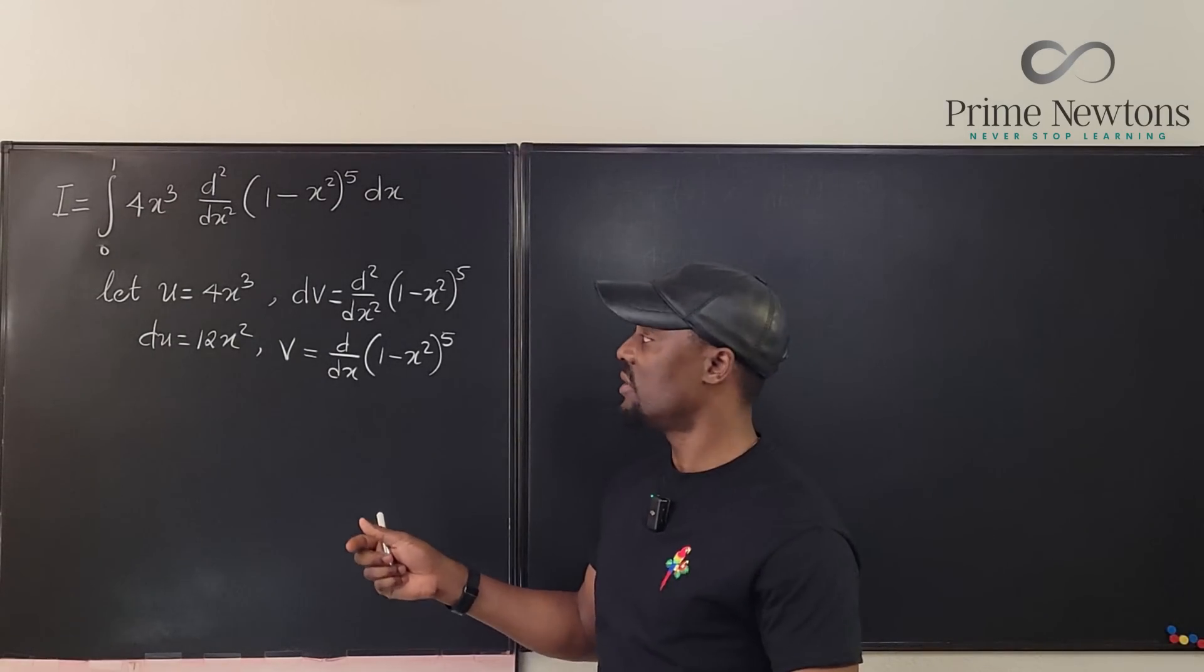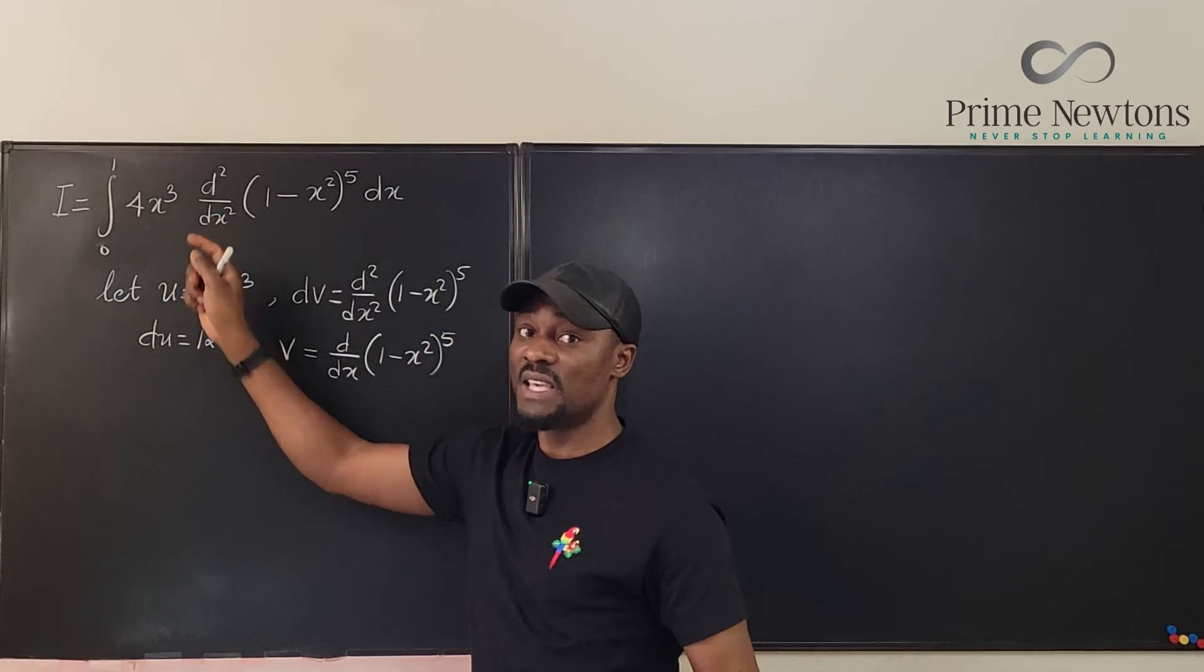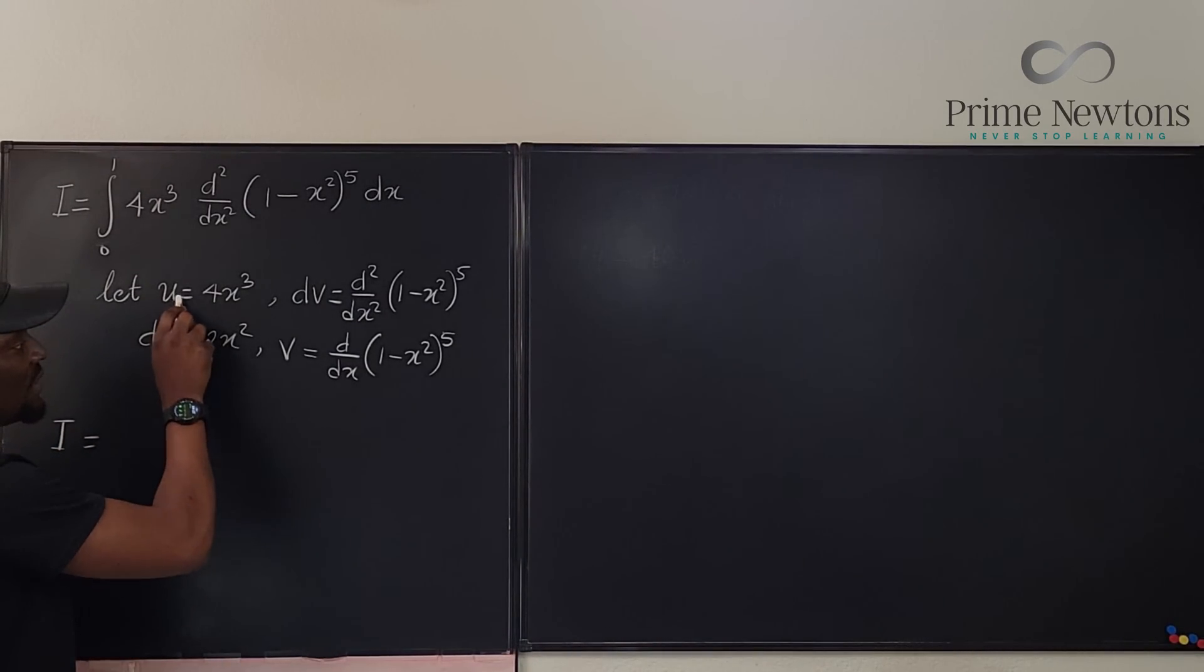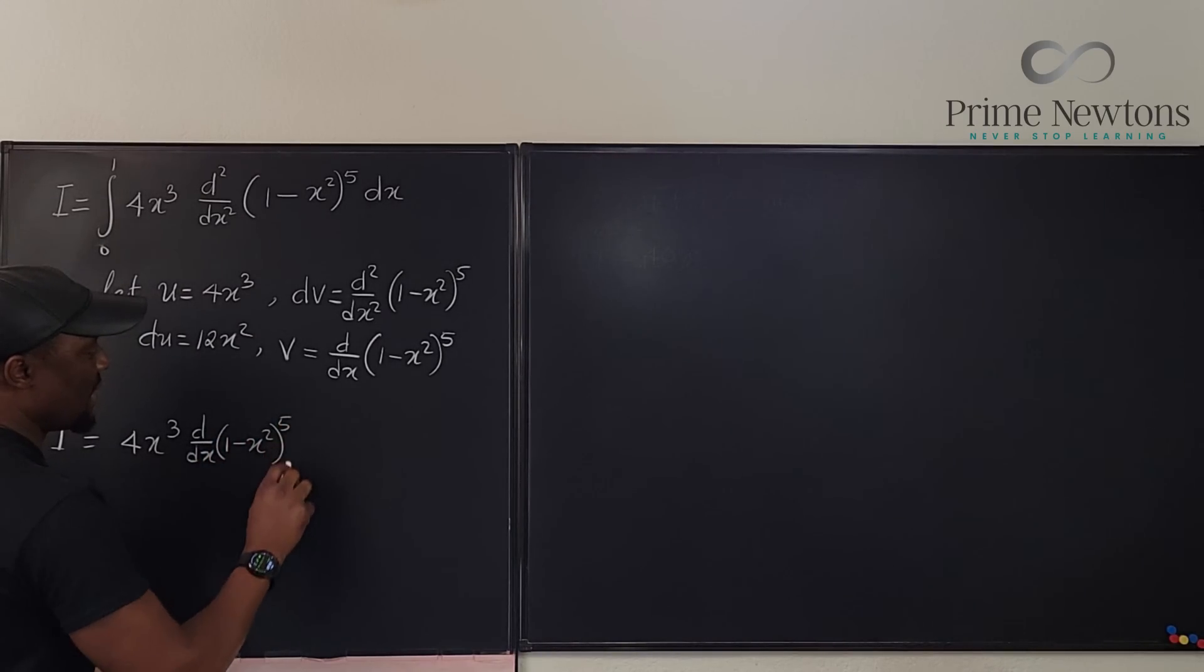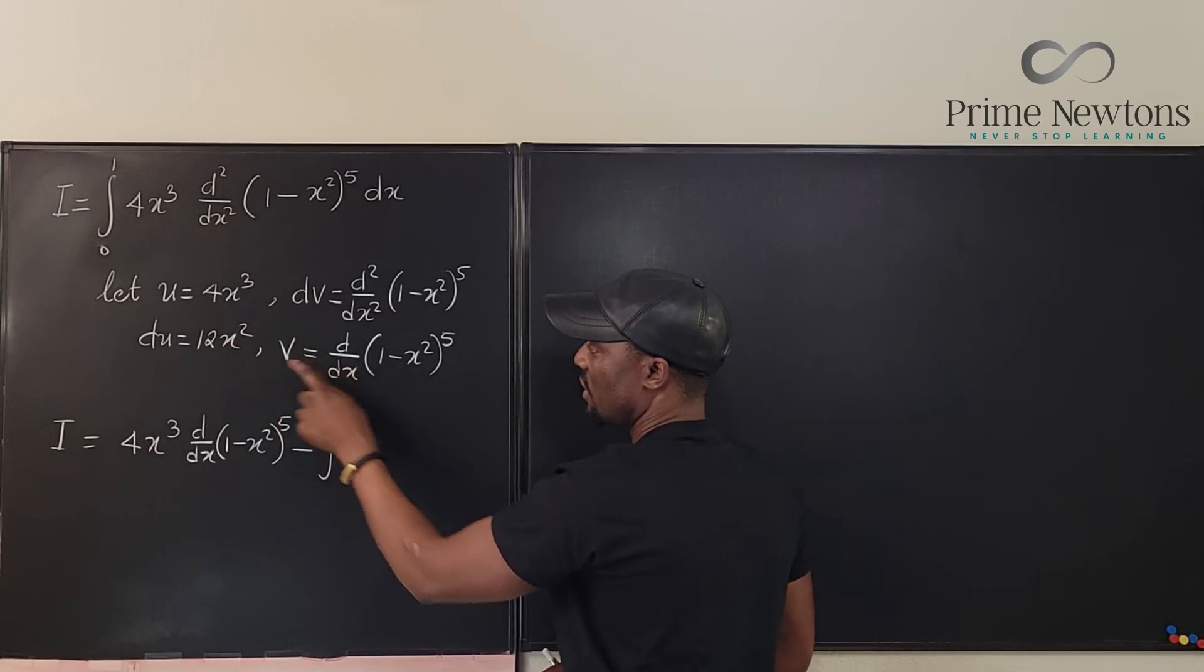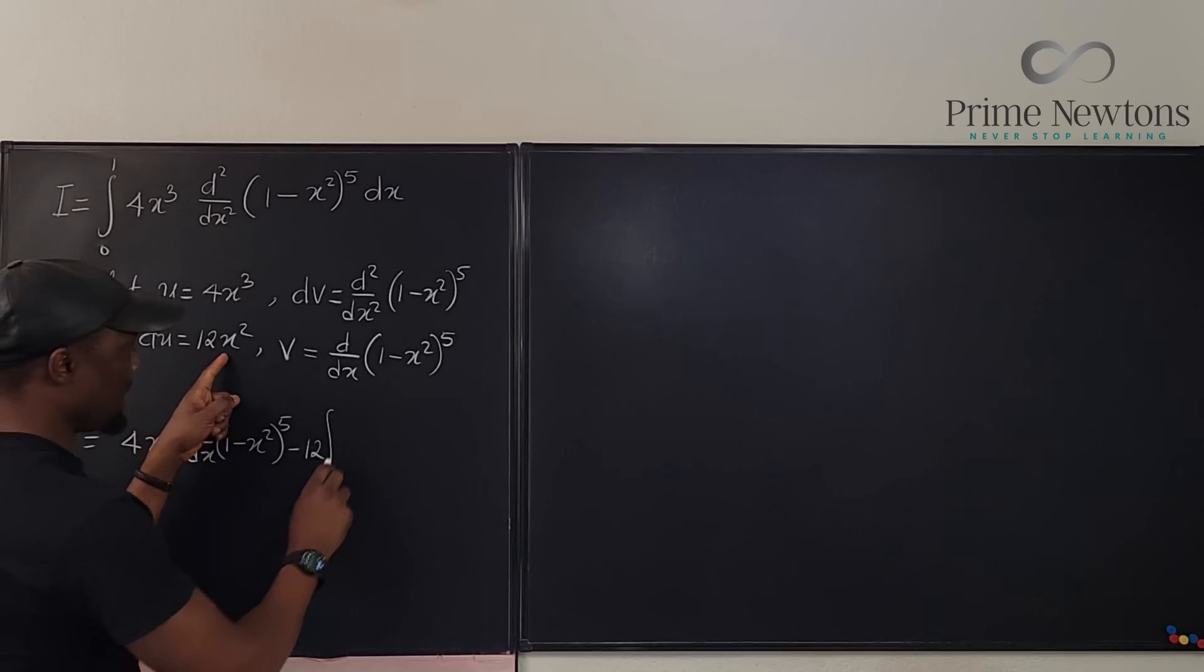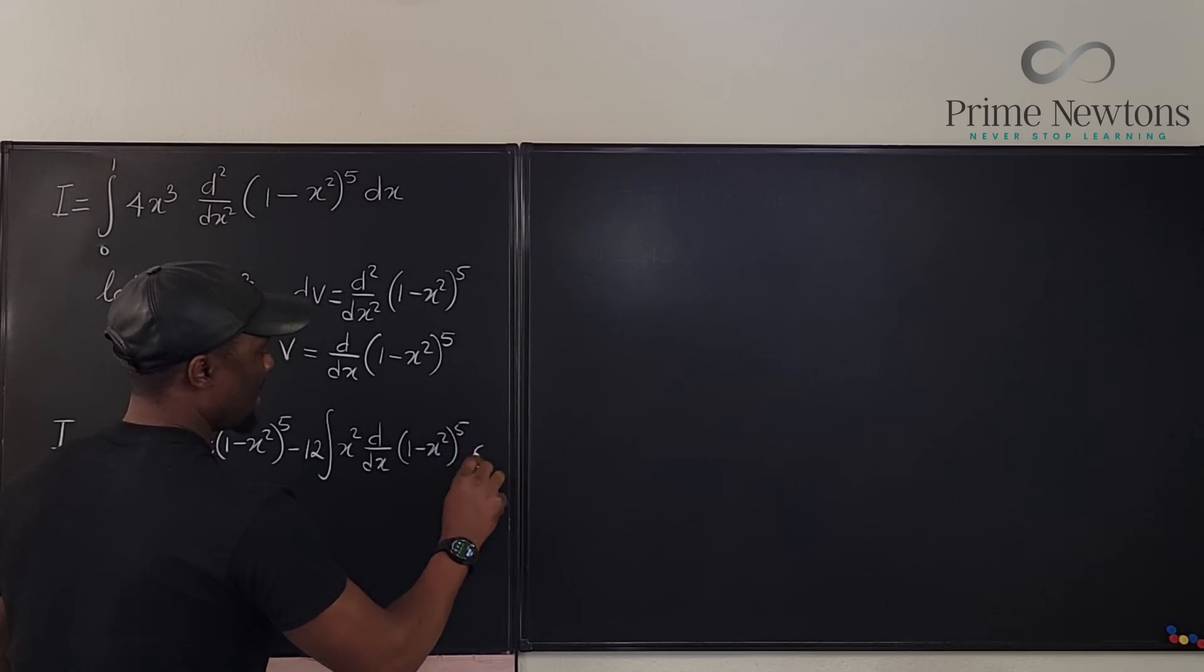Now what does it mean? Well we know that when you do integration by parts you're saying that this original was u dv. So this I is u dv and u dv equals uv minus the integral of v du. So this is going to be 4x cubed times d dx of 1 minus x squared to the fifth minus the integral of v du. v du is going to be this times this. So the product of these two is going to be 12x squared times this. Because this has a 12 I can pull the 12 out so I can write minus 12 and then I write x squared times d dx of 1 minus x squared to the fifth dx.